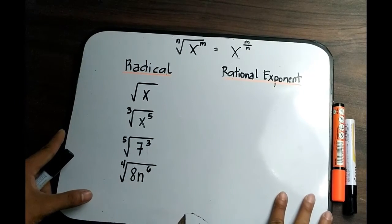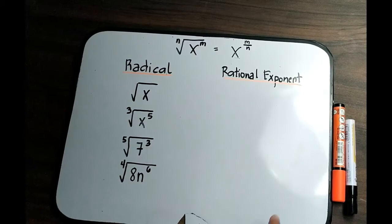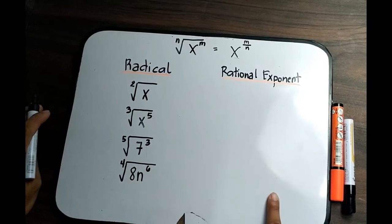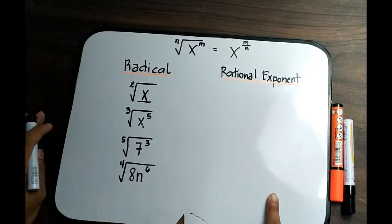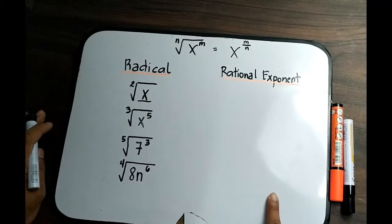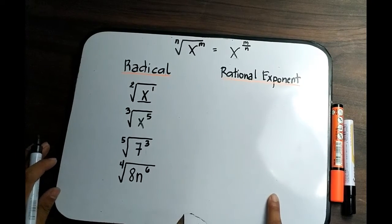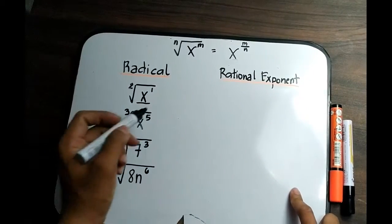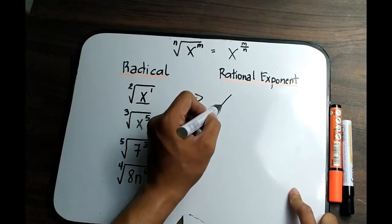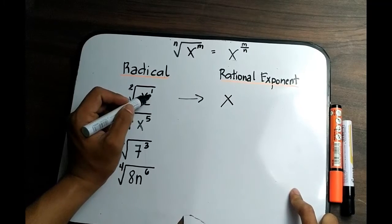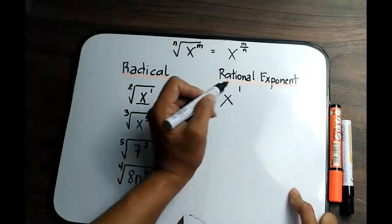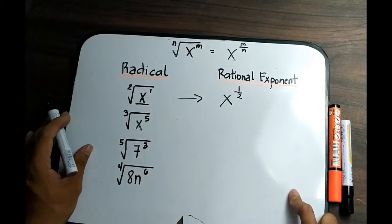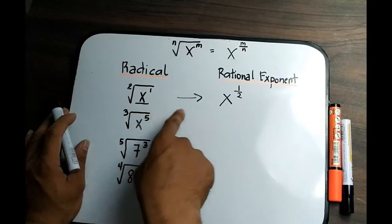In number 1, we have the square root of x. In radicals, if you don't see a number in the index part, it is automatically 2. The radicand doesn't have a visible exponent, meaning the exponent of your radicand is just 1. Following the pattern, the radicand becomes the base, the exponent 1 becomes the numerator, and the index 2 becomes the denominator. Therefore, the square root of x is equal to x raised to 1 half.